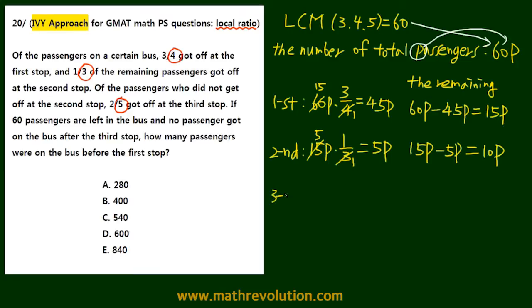On the third stop, two-fifths of the remaining passengers got off. So 10p times 2 over 5 - we can divide by 5, so 10 divided by 5 equals 2. We get 1 here, 2 here, so we get 4p.